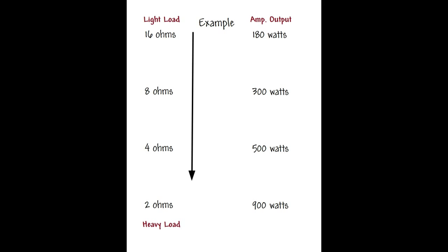2 ohms is a heavy load, 16 ohms at the top of the list is a light load. Depending upon the ohm level that is presented at the amplifier, the amplifier is going to adjust its wattage to accommodate for the load level. Basically the heavier the load, the more wattage an amplifier is going to put out. Now this is up to a point.